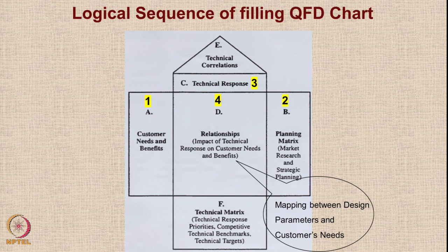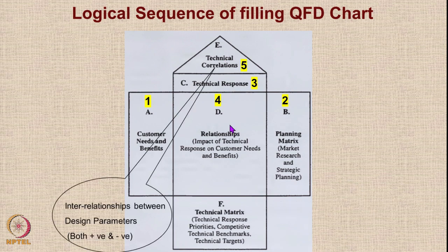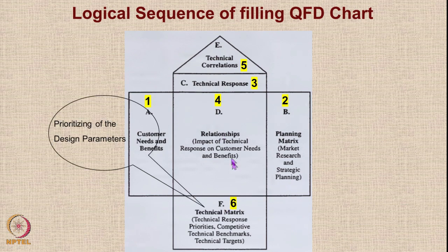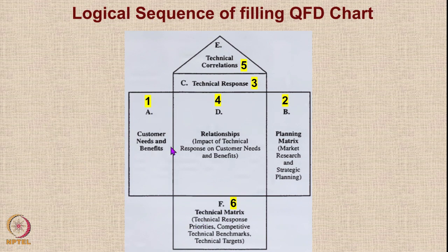If you start using negative numbers in the central matrix, it may cause confusion — two features with negative values could cancel out a positive feature. So we look only at positive relationships in the central matrix. Negative correlations are handled in the top roof where we look at interrelationships — there we consider both negative and positive. Finally, based on the numbers filled in the matrix, you can prioritize the design parameters.